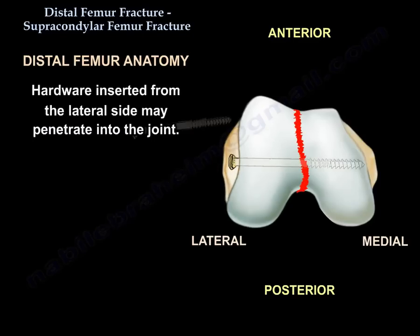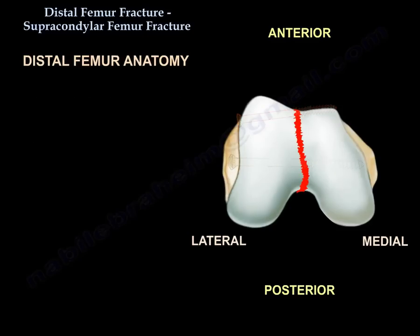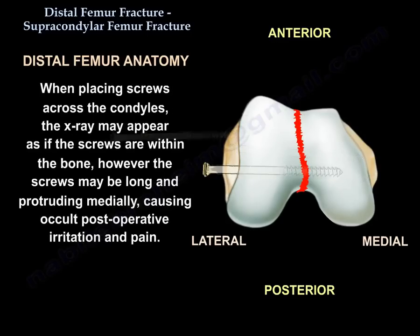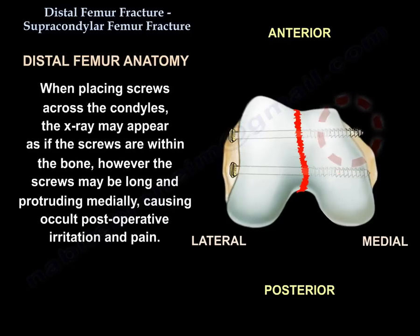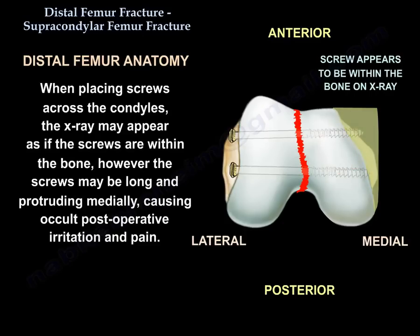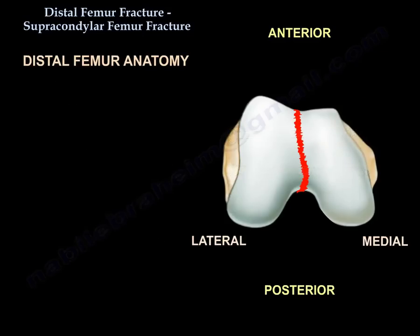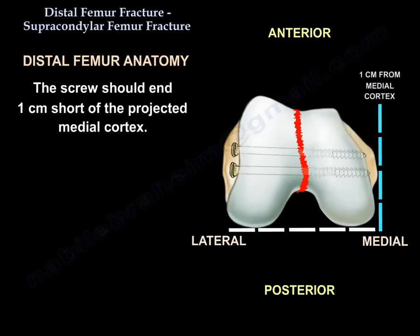Hardware inserted from the lateral side may penetrate into the joint, so try to direct the screws away from the joint to avoid joint penetration. When placing screws across the condyles, the x-ray may appear as if the screws are within the bone; however, the screws may be long and protruding medially, causing occult postoperative irritation and pain. The screw should end one centimeter short of the projected medial cortex.